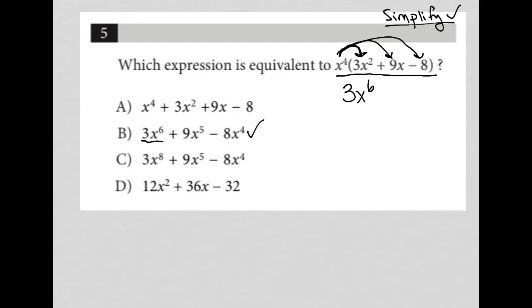But if you wanted to continue on just to make sure, we'd say, okay, well, x to the fourth times 9x. Well, that's a positive 9x to the fifth power. And then x to the fourth times negative 8. Well, that's a negative or minus 8x to the fourth power, right? So the answer that matches here is choice b.